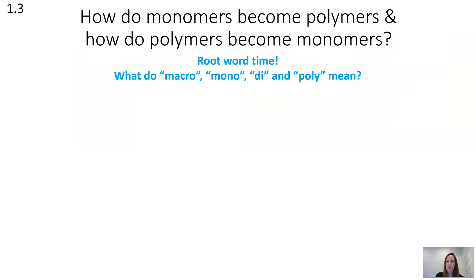What are monomers really, and how do they become polymers? And also, how do polymers become monomers? Before we get into this process, think through the root words involved. Macro means big, so macromolecules are big molecules. Mono means one, di is two, and poly is many. So when we're talking about monomers becoming polymers, we're talking about small bits becoming larger bits.